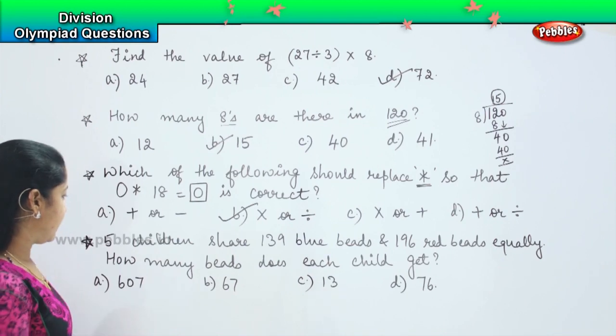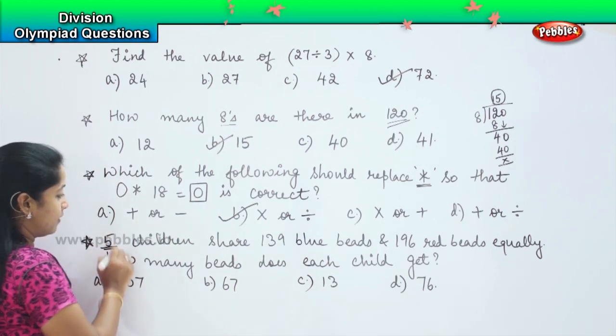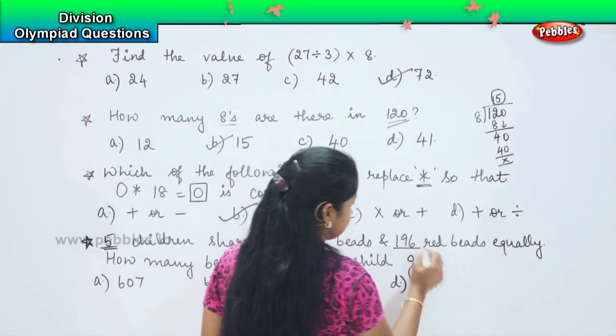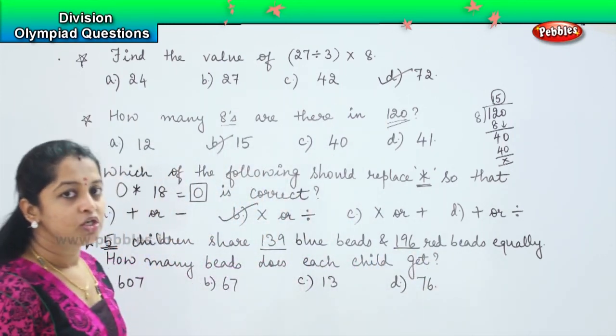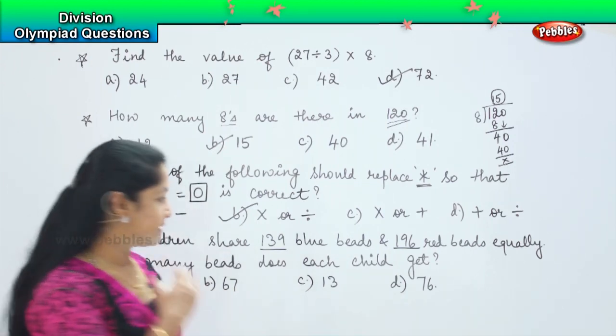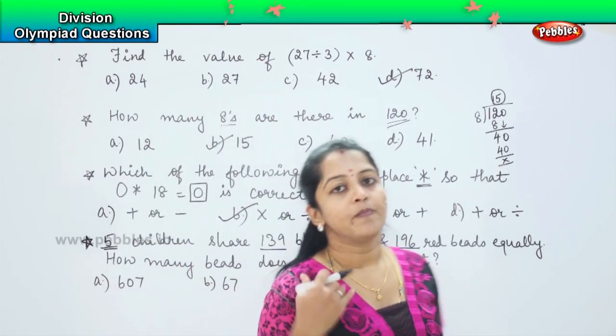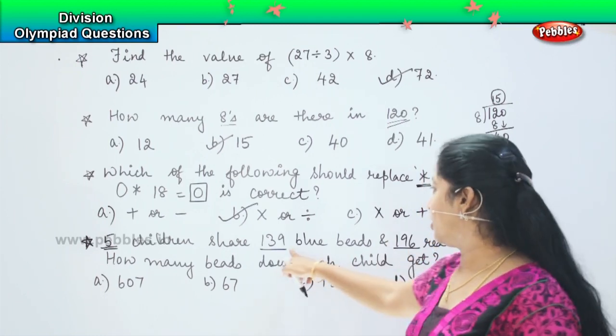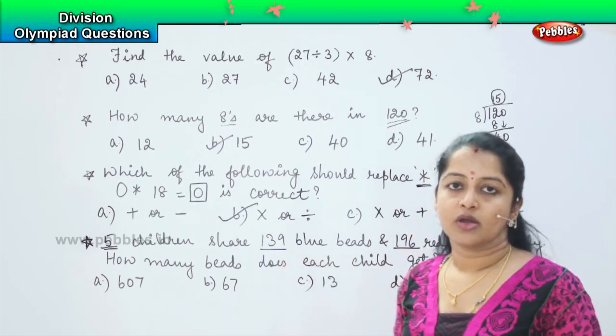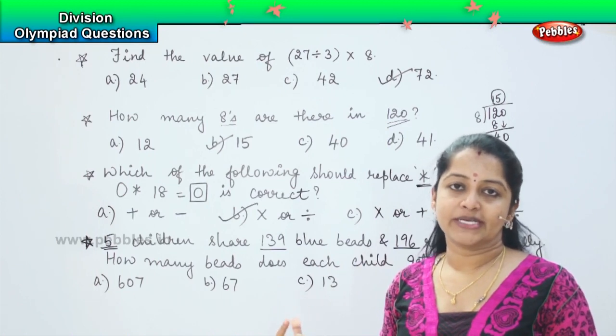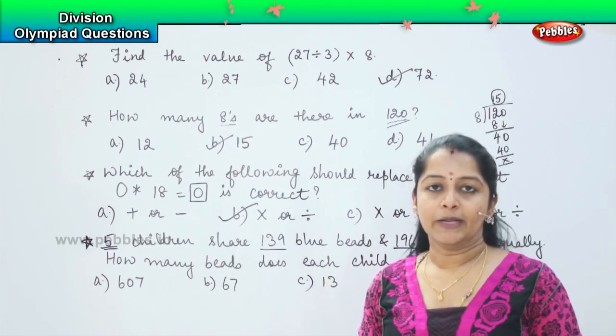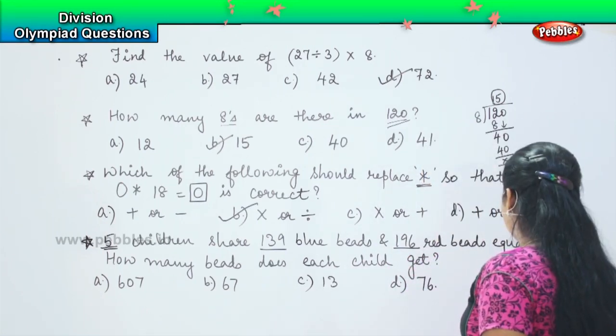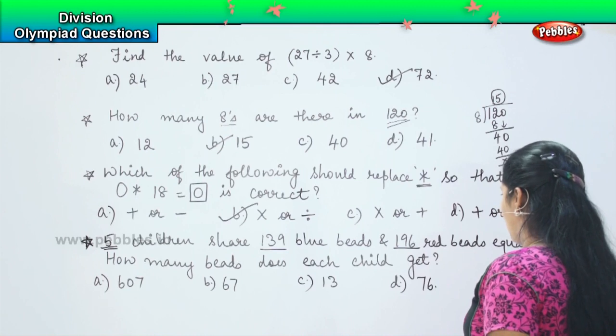So now, they say that 5 children share 139 blue beads and 196 red beads equally. So it means that they have just given this extra information to confuse us. So what we have to do is, first we need to add the total of blue beads, whatever is the total amount of beads which we obtain that we need to divide by 5.